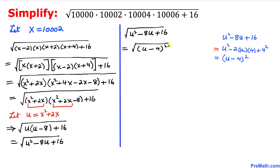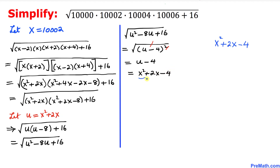Therefore the radical becomes the square root of (u minus 4) squared. The square and square root undo each other, so we simply get u minus 4. Since u equals x squared plus 2x, plugging back in gives x squared plus 2x minus 4.